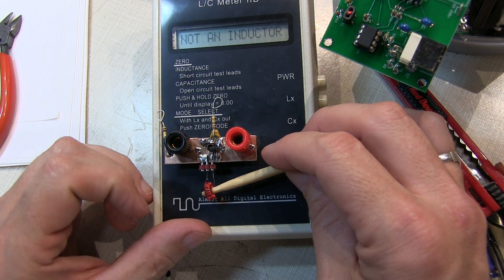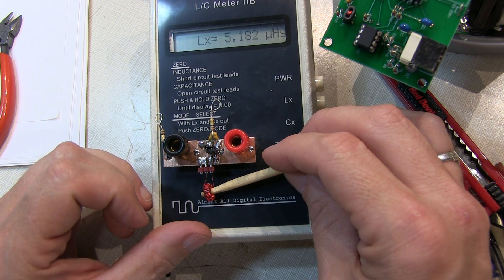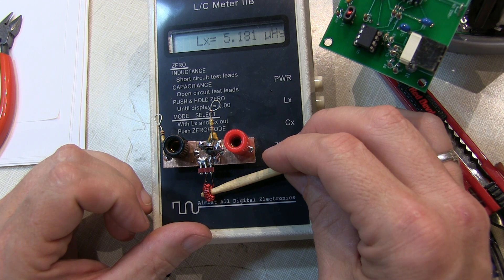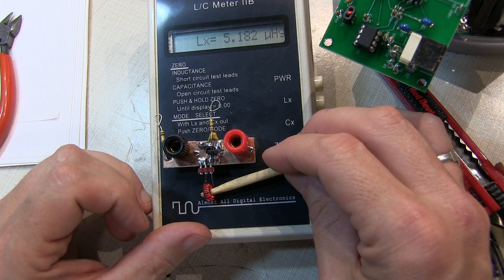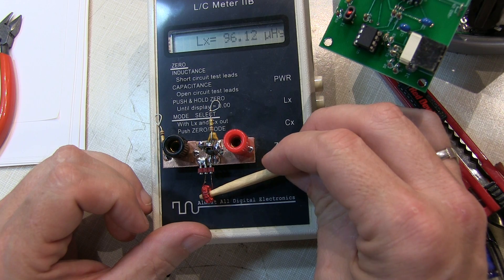And hold it in place without having my fingers on the coil which might affect the inductance. So if we take a look at it, I'm reading about 5.18 or about 5.2 microhenrys. It was designed to be 5.5 so that's less than 10% off. That's certainly going to be sufficient for the job.